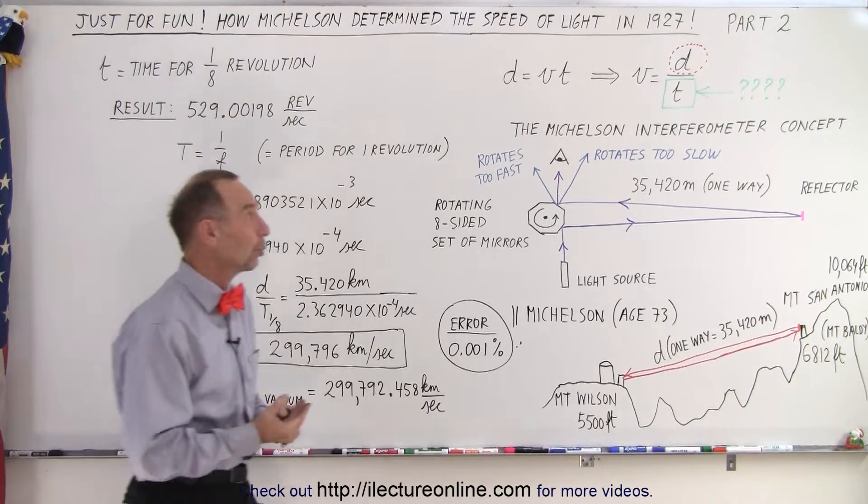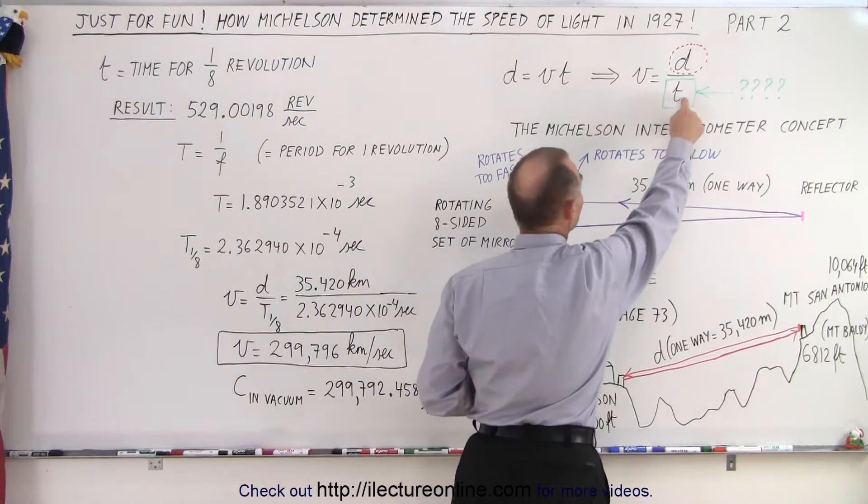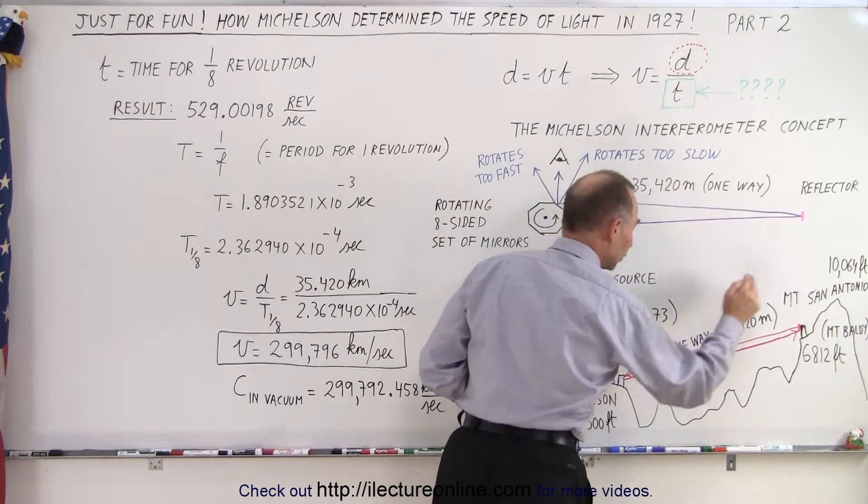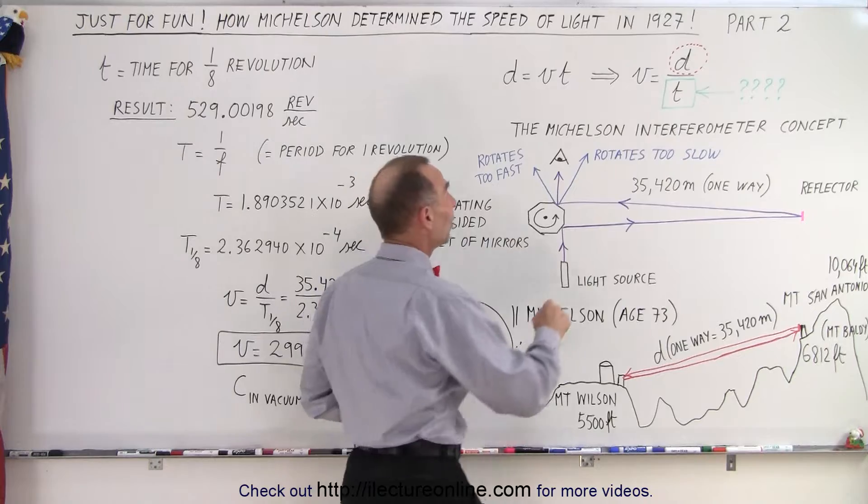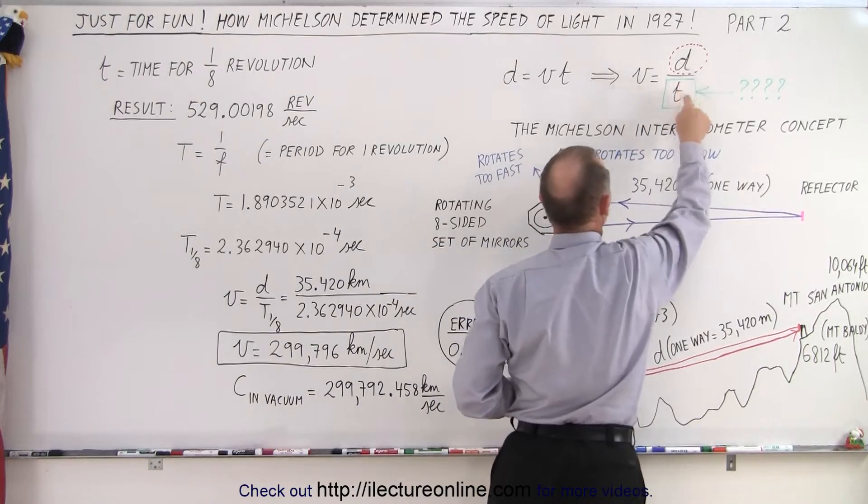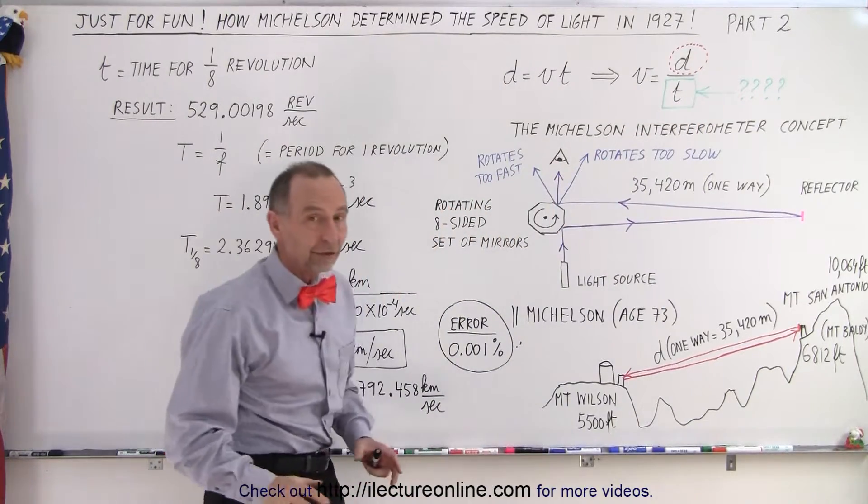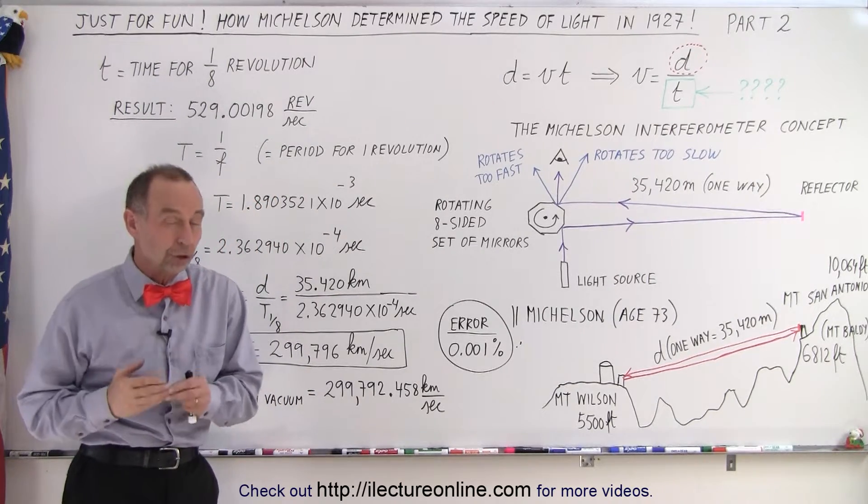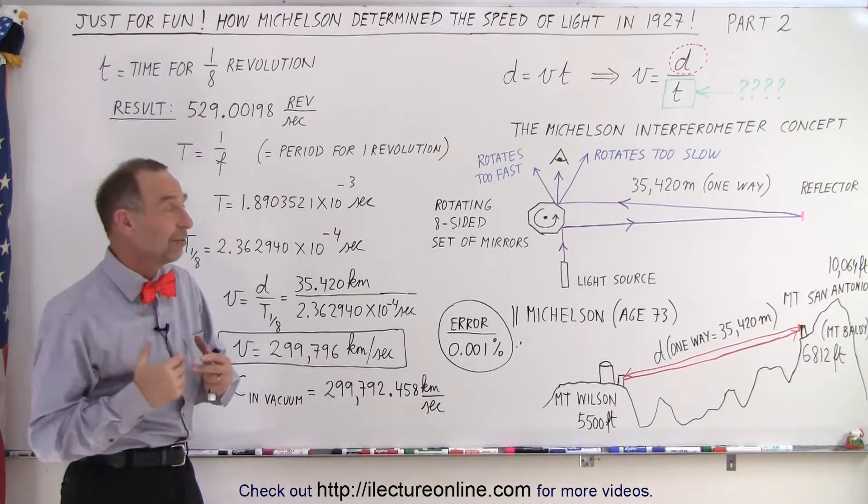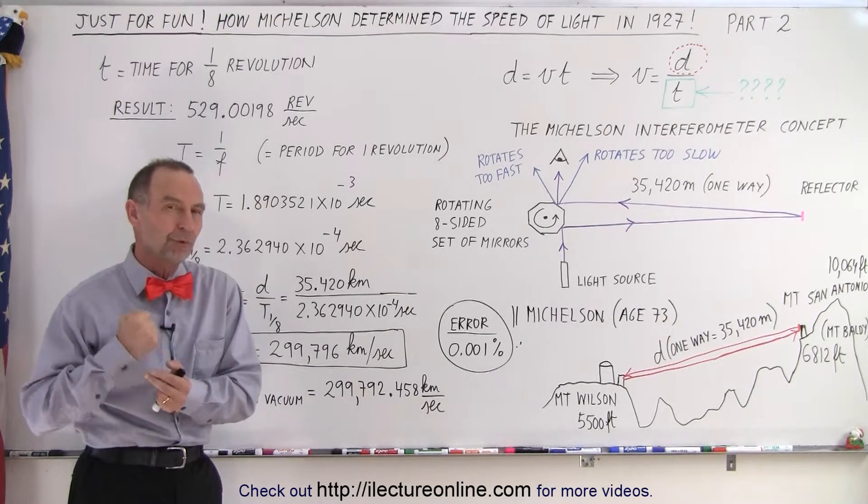Now the second part of the equation was how much time did light take to go from here to there and back. After all, if you're trying to find the speed of light, you take the distance that it travels and divide it by the time that it took to get there. So now the next big hurdle was to figure out how long that took, which was not an easy feat unless you came up with some brilliant method.